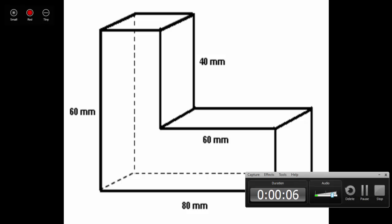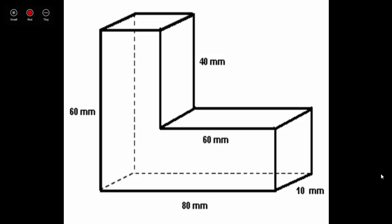In this lesson, we are going to learn how to find the volume of irregular figures. The first step to find the volume of an irregular three-dimensional figure, such as the one we see here, is the same as separating an irregular shape to find area — we separate that irregular figure into two or multiple rectangular prisms.